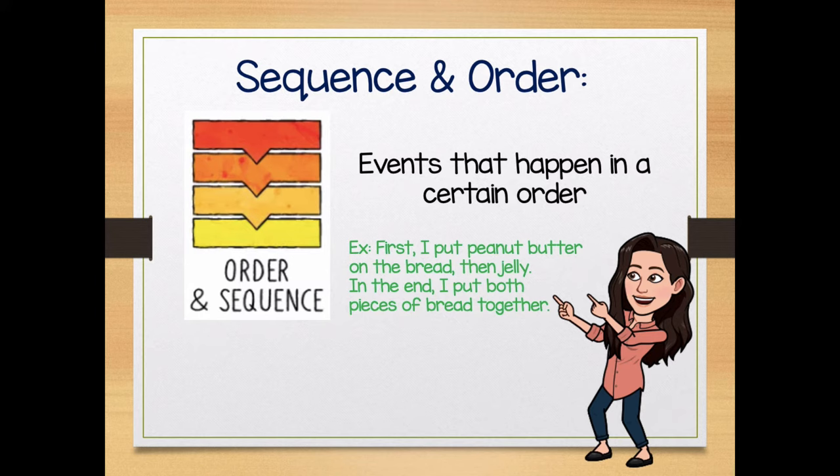The next text structure is sequence and order. These are events that happen in a certain order. One of the examples I like to use is with peanut butter and jelly — think about making a peanut butter and jelly sandwich. You have to do things in a certain order, right? So let's take a look at my sentence.